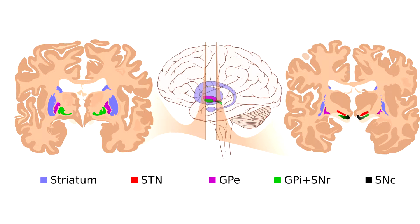Further, the substantia nigra pars compacta, abbreviated SNpc or SNC, and the subthalamic nucleus, abbreviated STN, are closely associated structures.